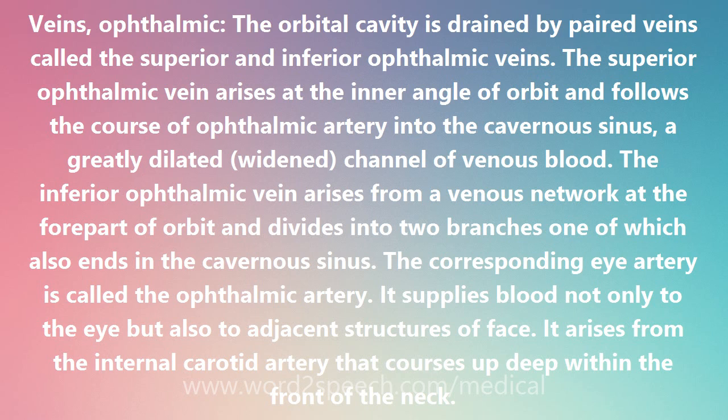The inferior ophthalmic vein arises from a venous network at the fore part of the orbit and divides into two branches, one of which also ends in the cavernous sinus.